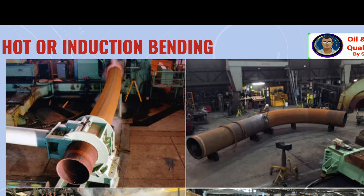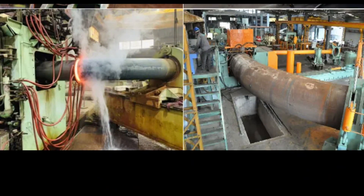Once everything is set as required, hydraulic pressure, water level, and switches are inspected and then the induction bending operation is started. Upon reaching the required temperature range, the pipe is pushed forward slowly at a speed of 10 to 40 millimeters per minute. The operation is stopped when the specified bend angle and predetermined arc length is reached.